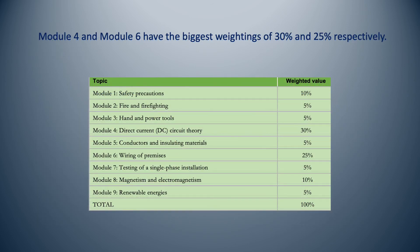The weightings of each module are indicated in your lecturer guide. This is a useful tool for knowing which sections and modules are the most important in terms of the exam. You'll see that the modules on direct current circuit theory and the wiring of premises have the biggest weightings of 30% and 25% respectively.